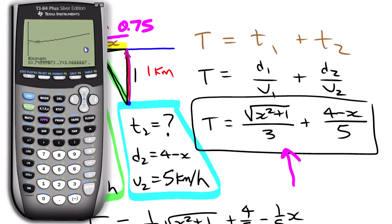The calculator gives 0.74999873 — that is essentially the value we found: 0.75. The y-value (the time T) is just over one hour. That confirms graphically what we did algebraically and shows that x = 0.75 gives us the least travel time.